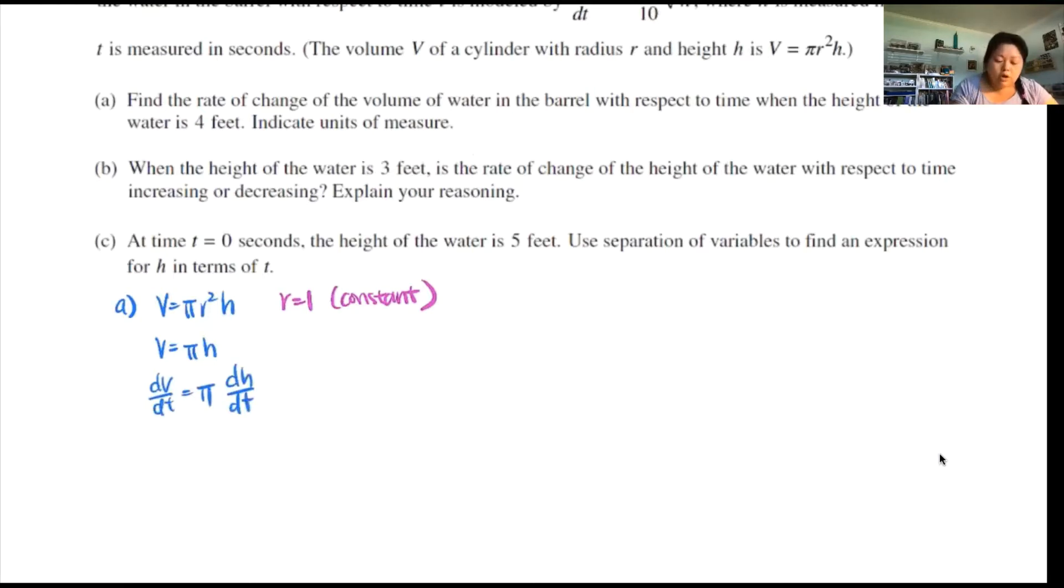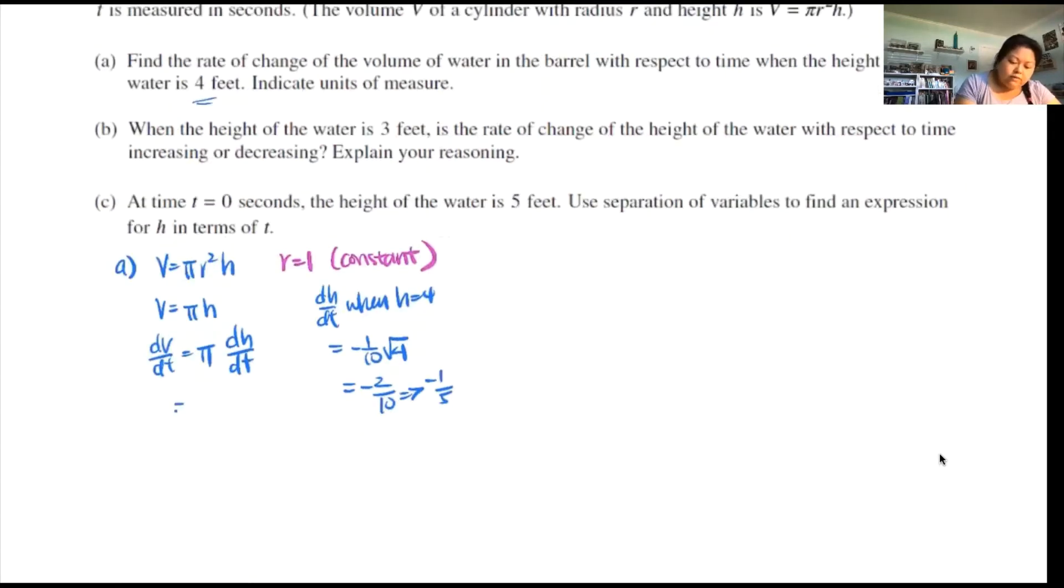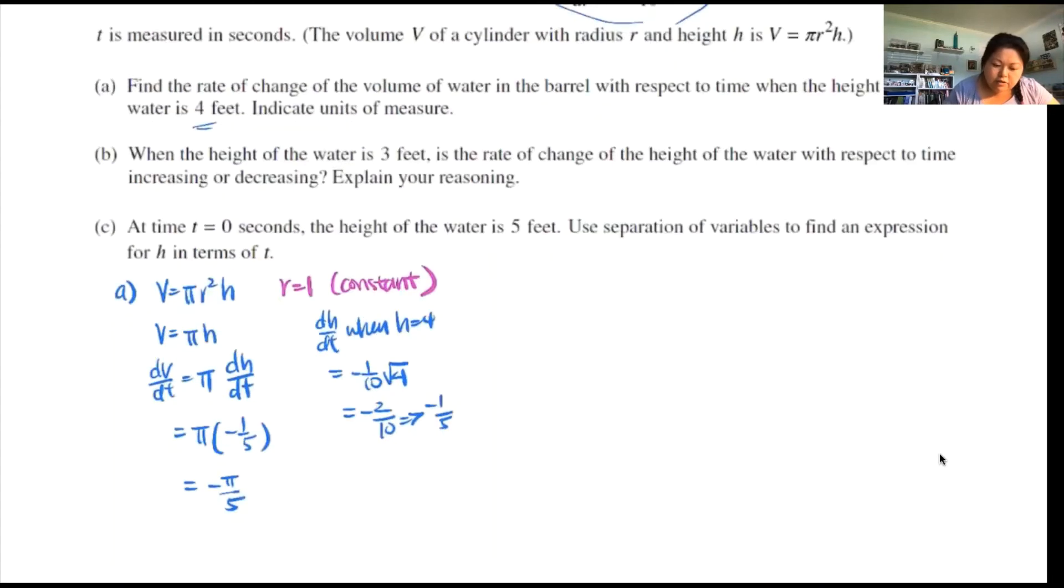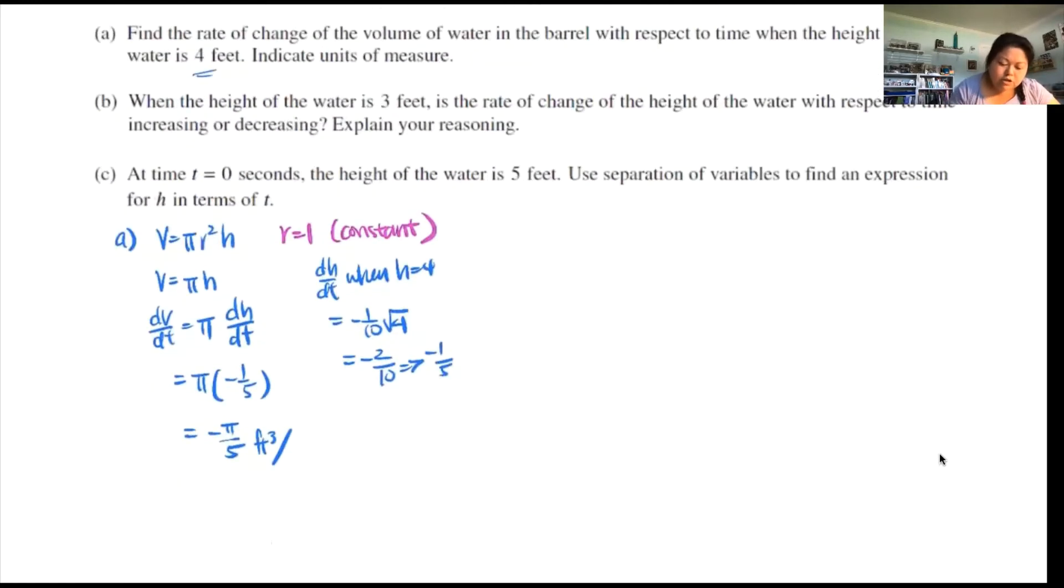Now dh/dt we know because it has a formula here, and we're looking at it when the height is 4 feet. So dh/dt when h equals 4 is negative 1 over 10 root 4, so negative 2 over 10, negative 1/5. So the volume is changing at pi times negative 1/5. It's changing at negative pi over 5 cubic feet per second.